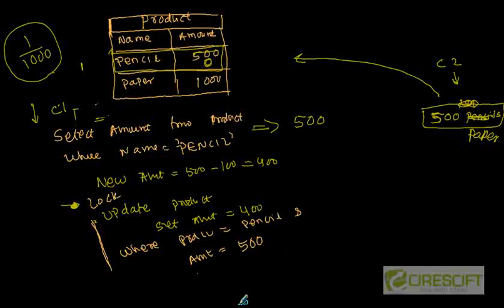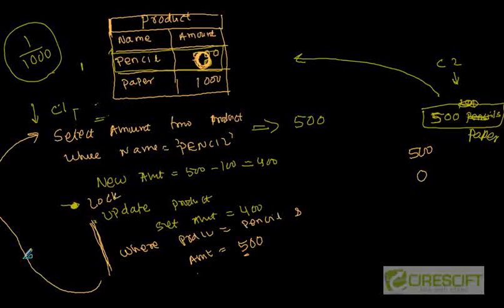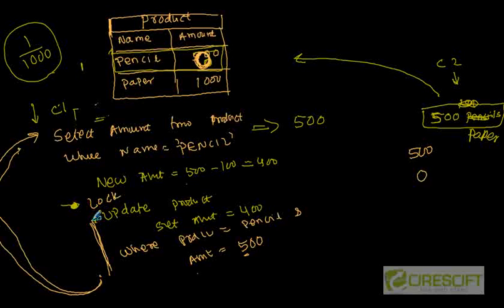Now consider the scenario where customer C2 requests 500 pencils. Customer C2 reads 500, deducts all of them, and makes it 0. So if C2 makes it 0 before this update happens, then whenever C1's update runs, this update is going to fail. Because the amount is now 0, not 500. In that case, what is going to happen? C1 is going to redo the transaction again — go and select what is the current amount. Because C1 did a select, then did not do anything immediately, just waited — still deciding whether to buy or not. In the meantime, somebody else came and bought all the pencils.